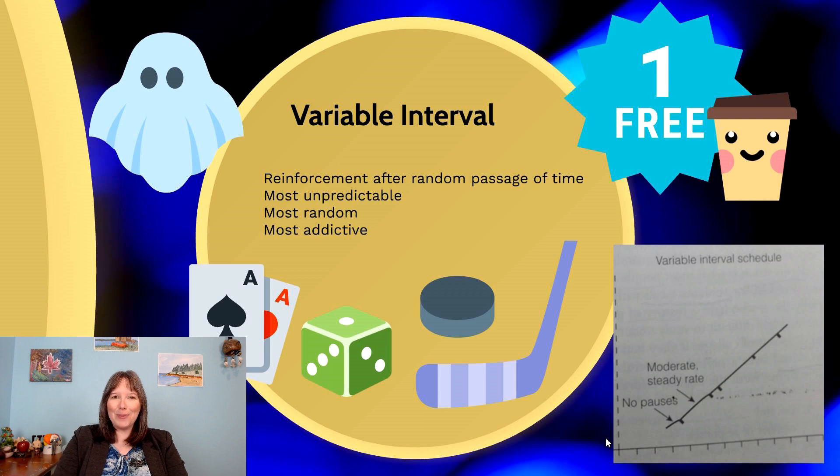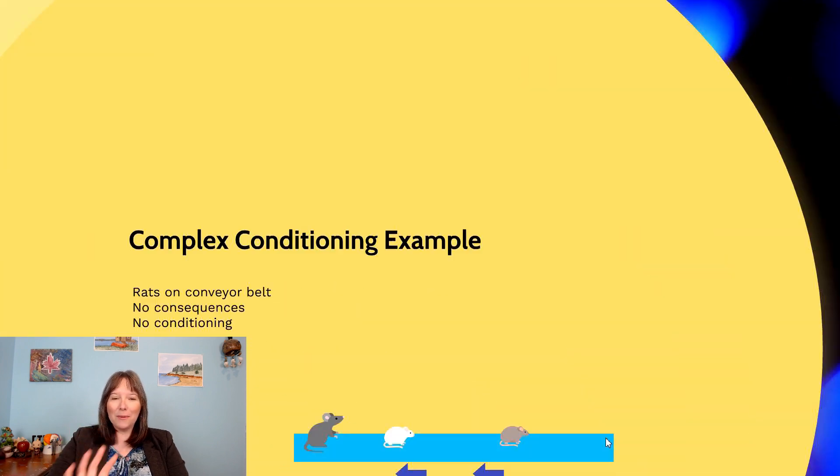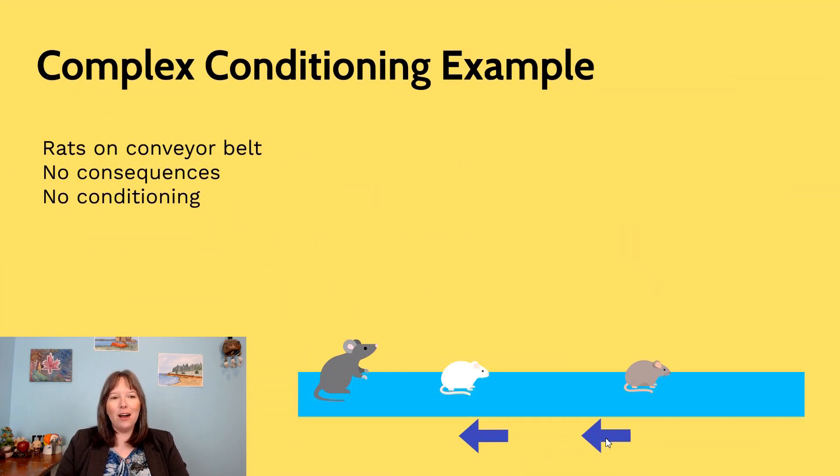Okay, we've done a lot of talking about operant and classical conditioning. I'm going to leave the conditioning bit off with one final complex conditioning example. This example is a real example and it combines classical and operant conditioning.